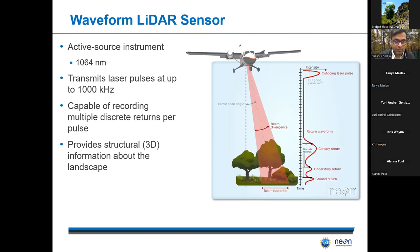A tree will also have gaps in the canopy, so not all the energy will reflect back. Some will penetrate the canopy and go deeper, encountering a second object — an understory shrub. Some energy bounces off the shrub back to the sensor, and some penetrates through to hit the third object, which is the ground. In total, this particular laser pulse encounters three objects, shown by three different peaks on the right.